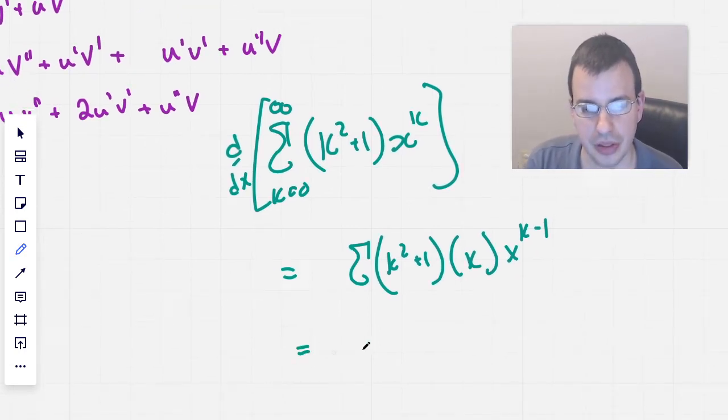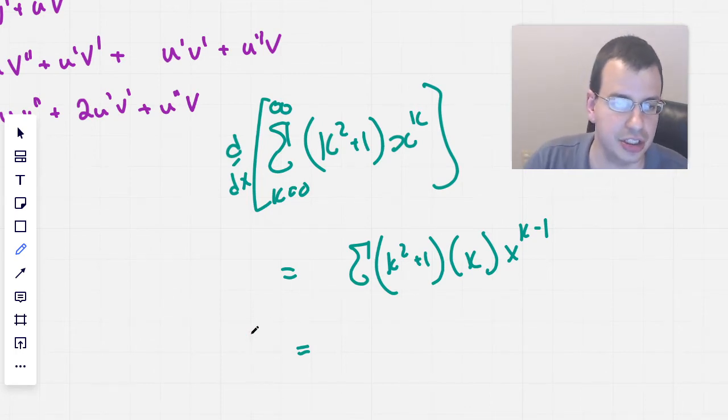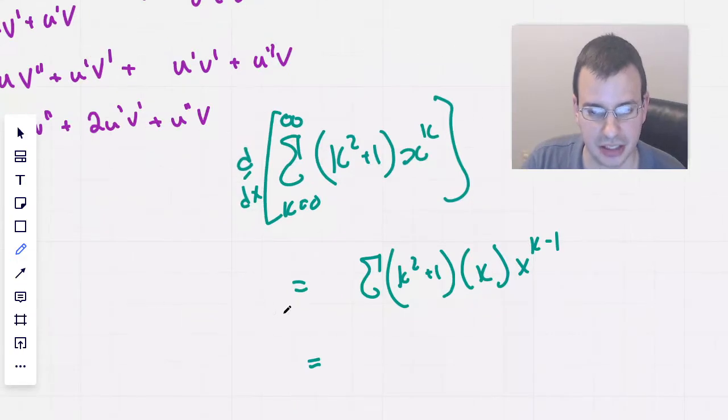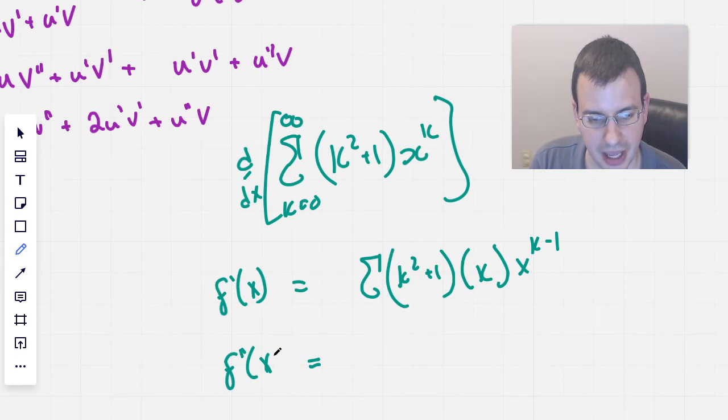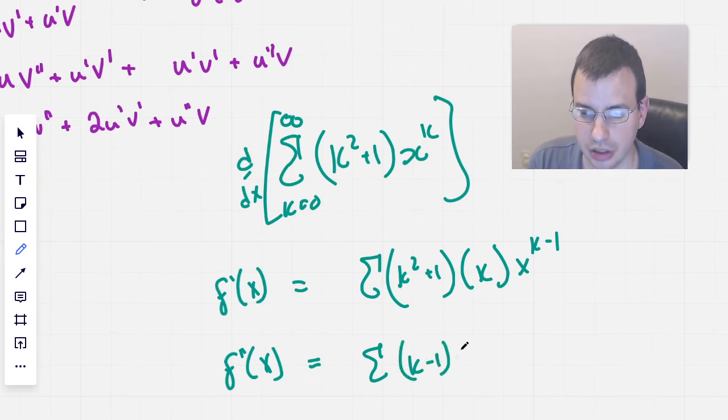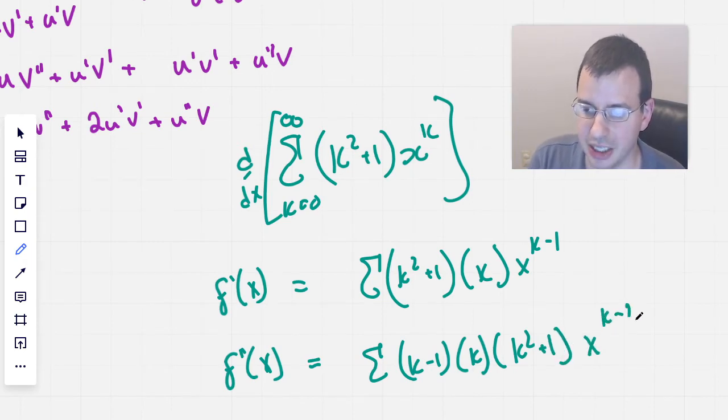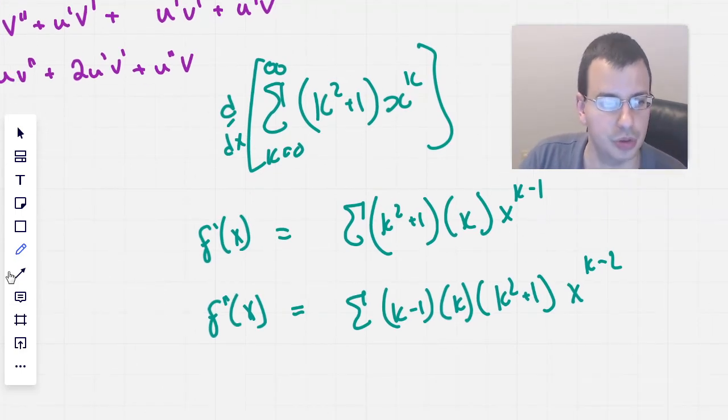So this is going to be f prime of x, and then f double prime of x will be the summation. Same thing again, except this time we're going to have (k - 1) times k times (k² + 1) times x to the k minus 2 now. Just the power rule again, not too hard. So so far we've used the product rule twice, and we've used the power rule twice.